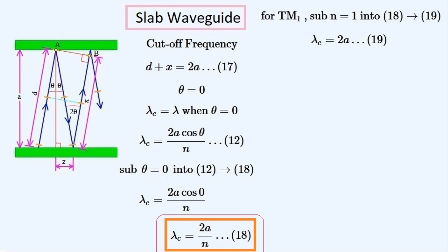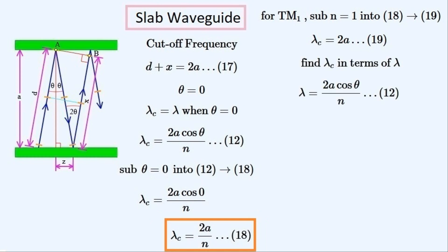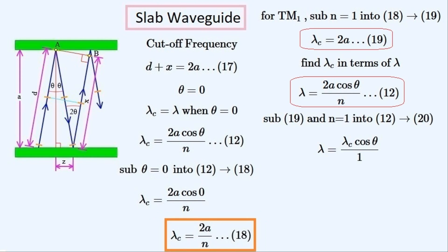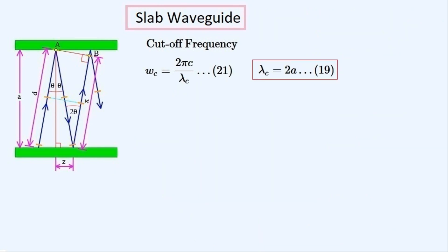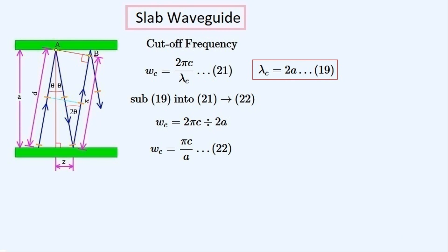When we evaluate it for the TE or TM1 mode, we substitute n equal to 1 to give us this simple equation. We can recall the equation that we derived earlier. When we evaluate it for the TM or TE1 mode at n equal to 1, we get this equation, and simplifying it gives us this equation. We can use this equation relating the cut-off radial frequency and the cut-off wavelength. Rearranging this equation gives us an equation for the cut-off radial frequency. After making this substitution we get this expression — the cut-off radial frequency of the waveguide for the first mode in terms of the plate separation distance a.